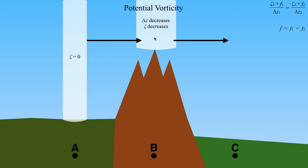Now we're going to bring this column from point B over point C, where the depth of this column is going to increase again — and it will be greater than the depth at point A. Go ahead and pause the video and try to work out what's going to happen to zeta as this column of air comes out over point C, where the depth increases again.